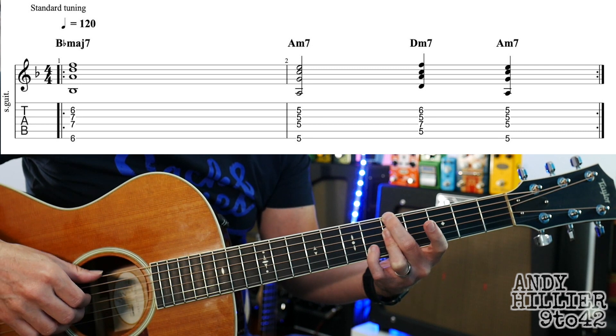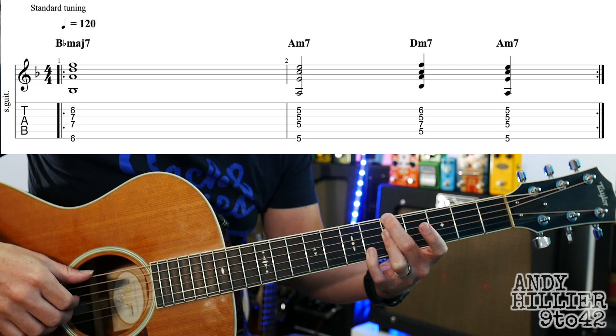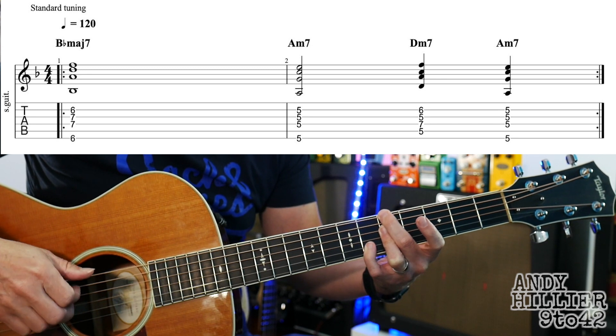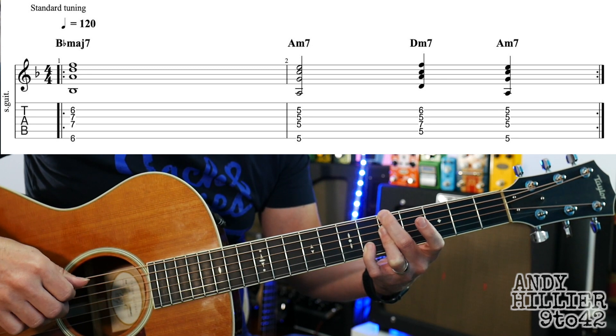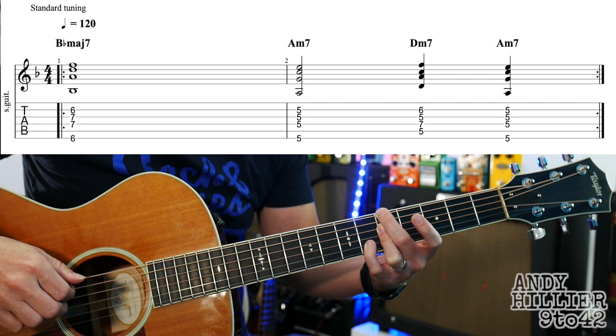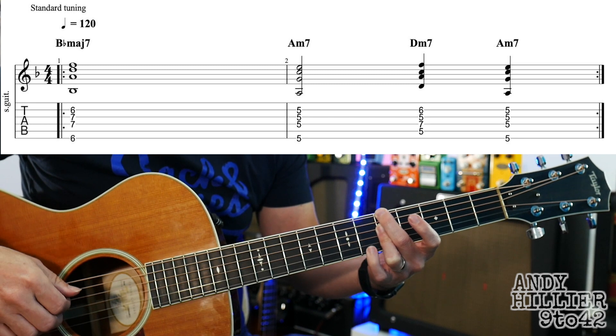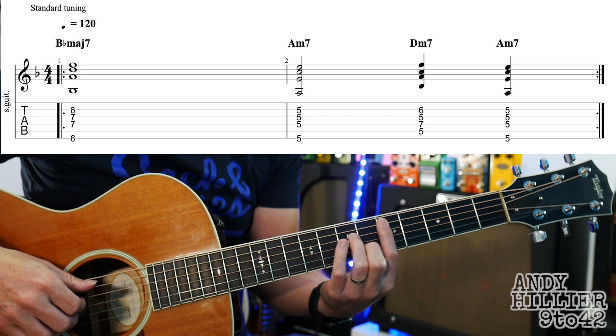Later on in the track, sometimes it puts the little finger on to the sixth fret of the B string as a slight variation, but you could still play the Am7, but occasionally I can hear this sharp five in it. But you can stick with just the Am7 if you want.